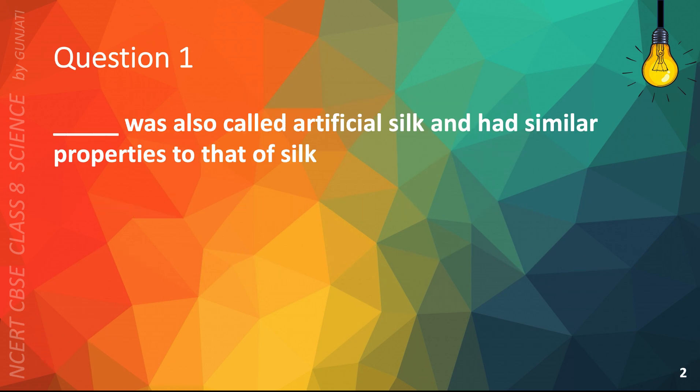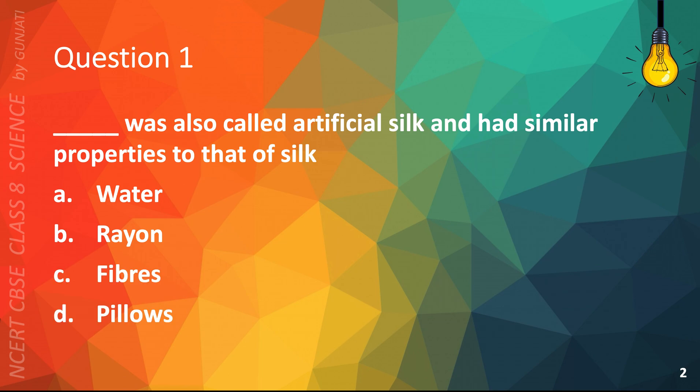Question 1. Blank was also called artificial silk and had similar properties to that of silk. A. Water, B. Rayon, C. Fibers, or D. Pillows. The correct answer is B. Rayon.